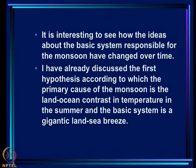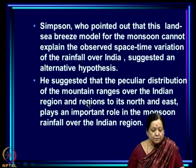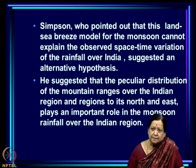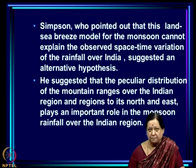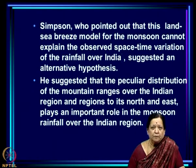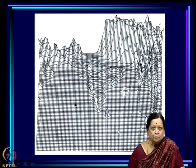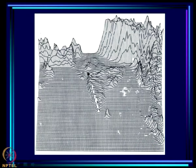The first hypothesis is that the primary cause of the monsoon is the land-ocean temperature contrast in summer, making the basic system a gigantic land-sea breeze. Simpson, who argued against this model, suggested an alternative hypothesis: that the peculiar distribution of mountain ranges over the Indian region and regions to its north and east plays an important role in the monsoon rainfall over India.